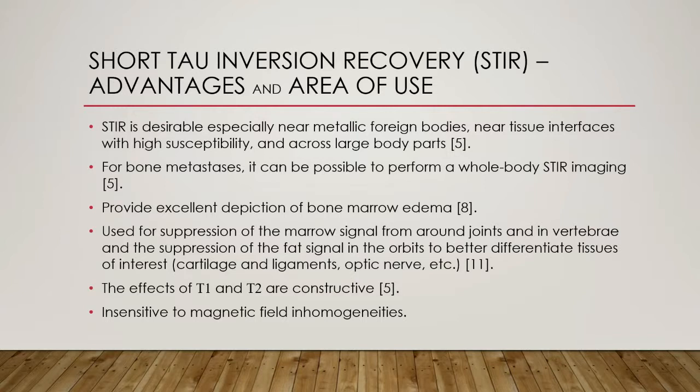In conventional T1-weighted spin echo imaging, tissues with long T1 and T2 have destructive effects on signals, but in STIR imaging the effects of T1 and T2 are constructive. This arises from the fact that the longitudinal magnetization of long T1 tissues in STIR remains inverted and produces a high signal. Also, STIR is insensitive to magnetic field inhomogeneities.